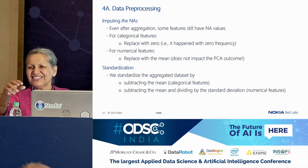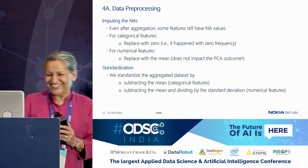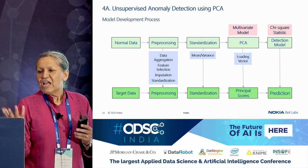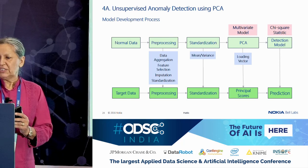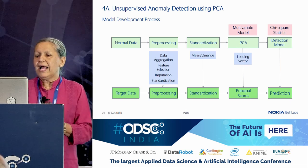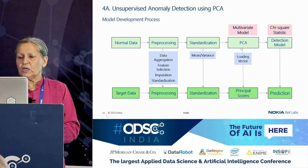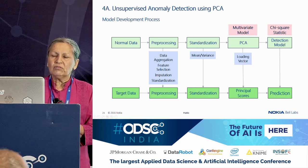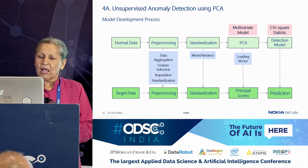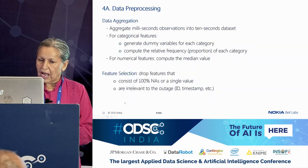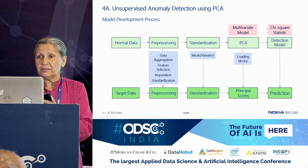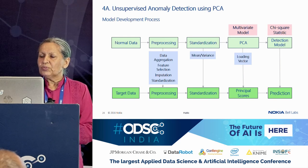Now for PCA: we take the normal data, do the pre-processing and standardization, run the PCA model, and then create a detection model by computing a chi-square statistic. Once the model is trained on normal data, when we get target data we do the same processing, standardization, run PCA to get the principal scores, and then do prediction.